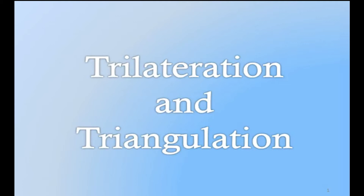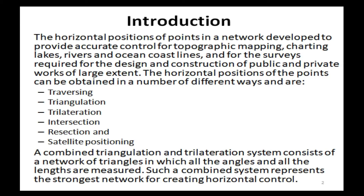The topic is trilateration and triangulation. Let's start with the introduction. The horizontal positions of points in a network are developed to provide accurate control for topographic mapping, charting lakes, rivers, and ocean coastlines, and for surveys required for the design and construction of public and private works of large extent. The horizontal positions can be obtained by traversing, triangulation, trilateration, intersection, resection, and satellite positioning. A combined triangulation and trilateration system consists of a network of triangles in which all the angles and lengths are measured.